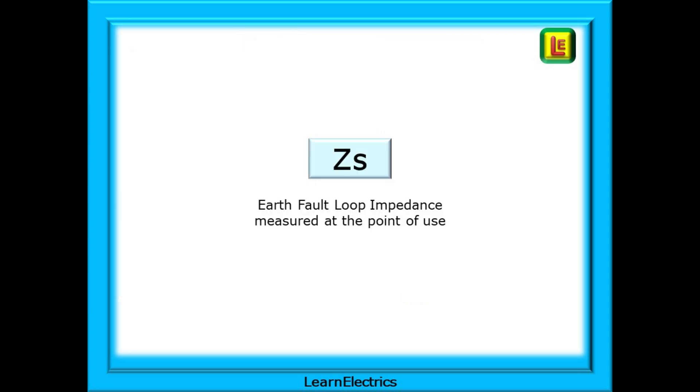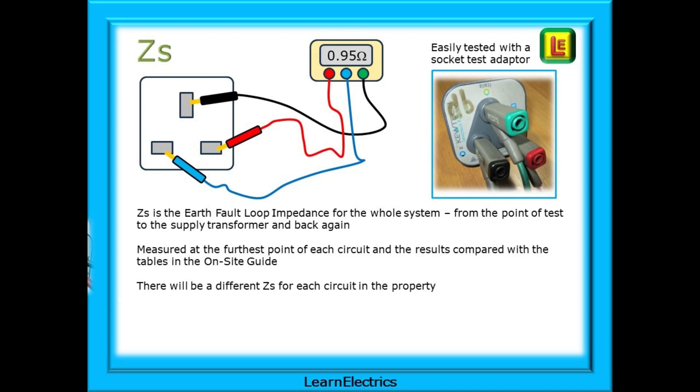Let's not forget ZS, the earth fault loop impedance measured at the various points of use around the property. ZS is the earth fault loop impedance for the whole system from the point of test to the supply transformer and back again. It is measured at the furthest point of each circuit and the results compared with the tables in the on-site guide. There are various test adapters that allow us to carry out ZS testing without dismantling the circuit. Shown here is a very useful socket test adapter. They are also available for lighting and other uses. There will be a different ZS for each circuit in the property and we have videos that cover ZS testing in great detail.